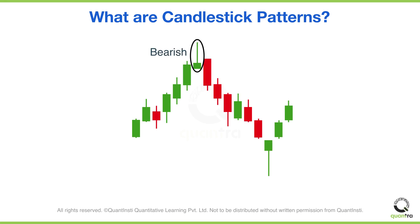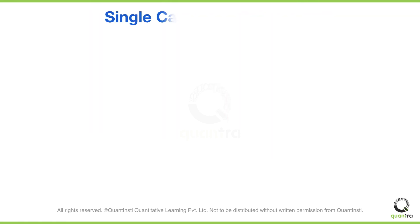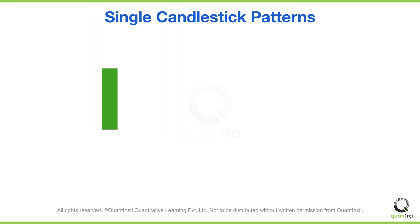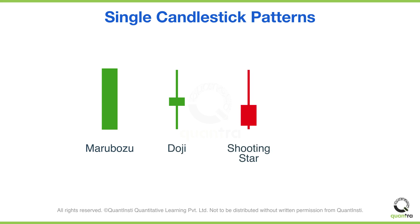Candlestick patterns can be an indicator of bullishness, bearishness, or neutrality. In the first example, the candlestick was bearish, and in the second example, the candlestick was bullish. A green candle with no wicks indicates bullishness in the market and is called a Marubozu. On the other hand, the candle with a very small body and large wicks indicates indecision in the market — it is called a Doji. There are many other patterns like Shooting Star and Hammer that indicate different market sentiment.